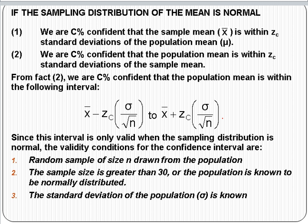If we know that the sampling distribution of the mean is normal, and we know that the X-bars are normally distributed, then we are C% confident that any given sample mean randomly selected is within Z sub C standard deviations of the population mean. For example, we'd be 95% confident that X-bar is within 1.96 — approximately two — standard deviations of the population mean. And if we turn that around, we're C% confident that the population mean is within that same number of standard deviations of the sample mean.